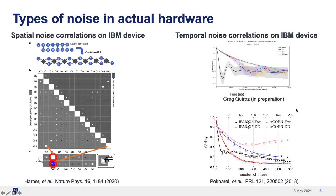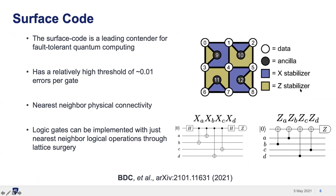Time correlations also exist. Work from Daniel Lidar's group shows various control sequences where, if there were no time correlations, you'd expect smooth exponential decay of fidelity versus time. What we see instead is not smooth decay — a strong indicator that there are time correlations on these qubits — not the Markovian, totally uncorrelated evolution one would expect.